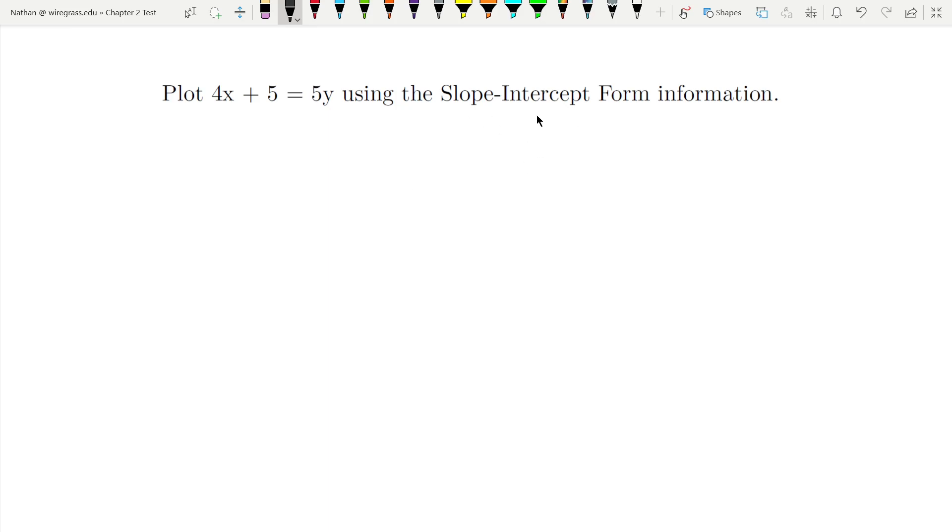But the slope-intercept form is very easy to graph, so we're going to solve this thing for y to get the slope-intercept form. All I have to do for that is divide everything by 5, and that'll give me y by itself.